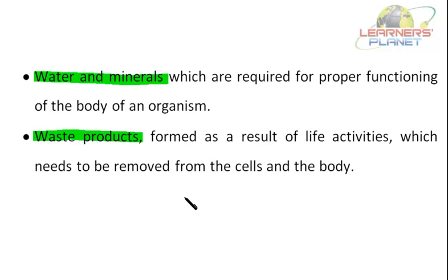Besides oxygen and carbon dioxide, the blood also transports digested food, hormones, and urea. All these substances are very important and need to be transported in our body, to ensure that the different organ systems of the living organism work very efficiently.